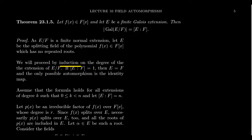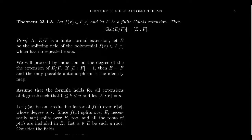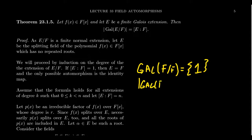We proceed by induction on the degree of the extension E over F. The base case is when the degree is 1, which only happens if F and E are exactly the same field. The Galois group consists of all automorphisms of E fixing F, so if E equals F the only available automorphism is the identity map. Thus the Galois group of F over F has order 1, equal to the degree. That gives us the base case.